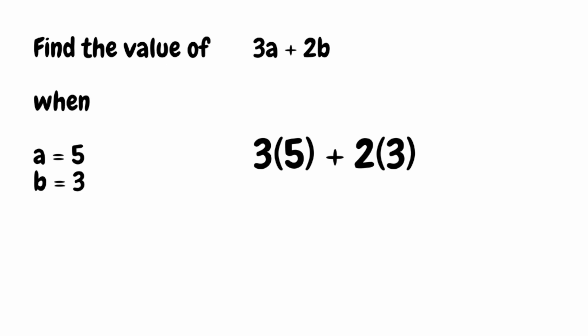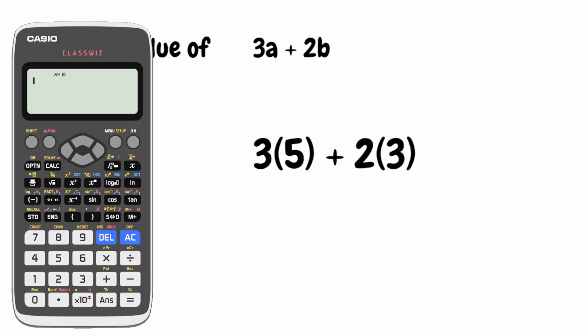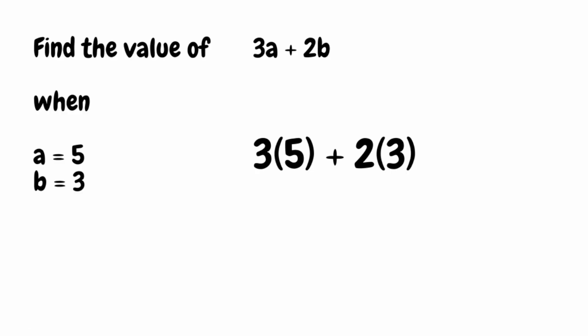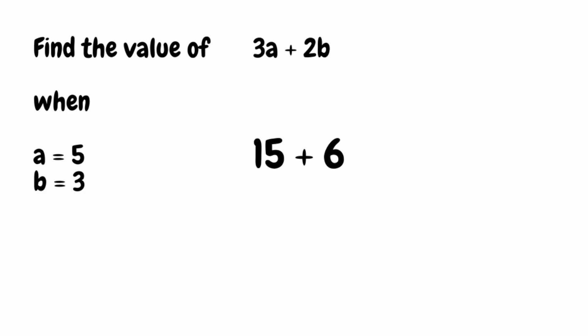Using brackets can be extremely useful, especially if we're allowed to use a calculator, because all we need to do is type it in as we see it. So we've got 3 multiplied by 5, then adding 2 multiplied by 3. We hit equals and that gives us 21. By using these brackets, we're making sure we're applying the rules of the order of operations. Without a calculator, we simplify: 3 times 5 gives us 15, and 2 times 3 gives us 6. Then 15 plus 6 gives us 21. So the value of the expression 3a plus 2b is 21.